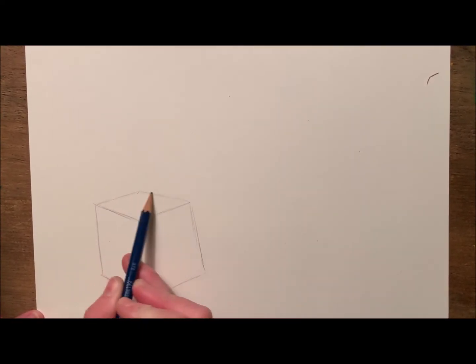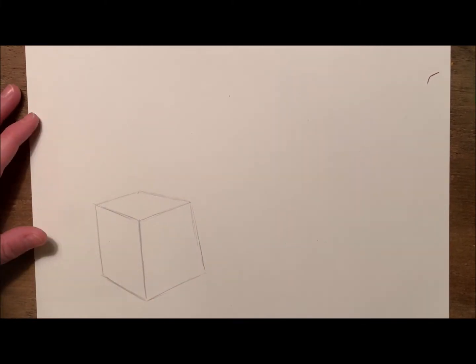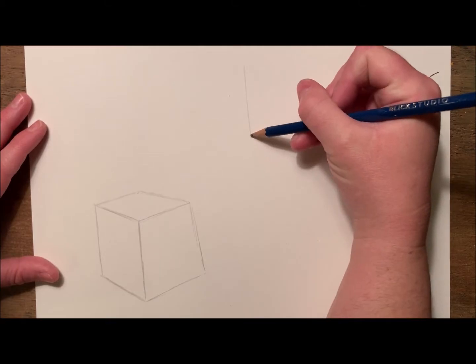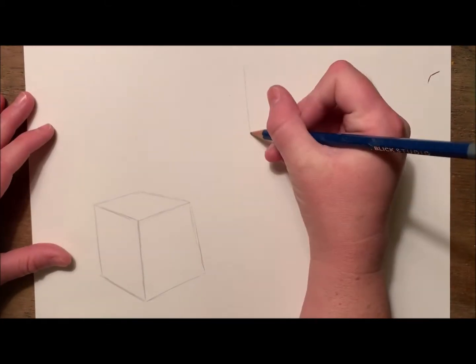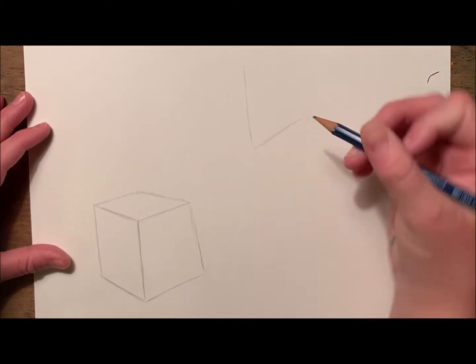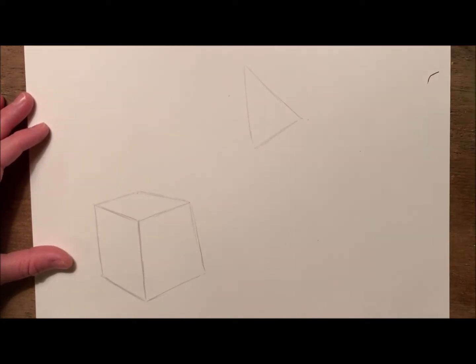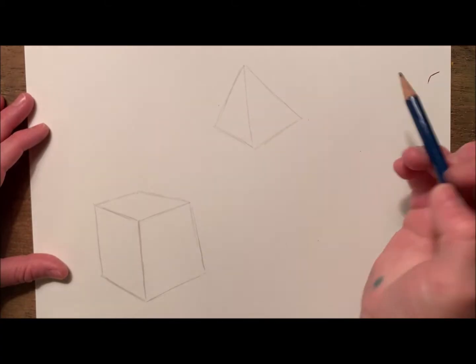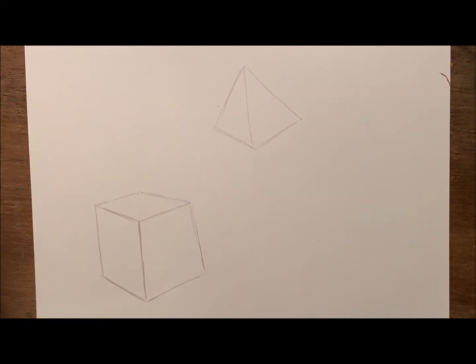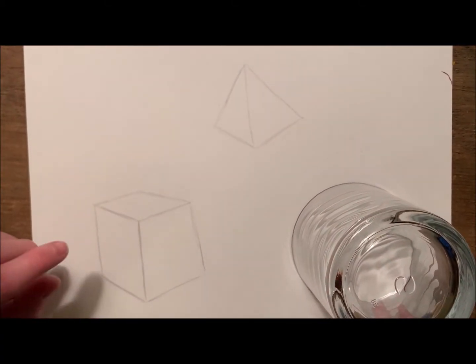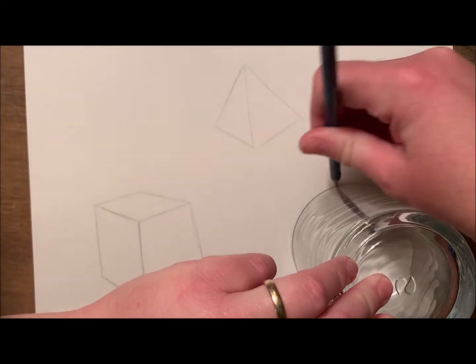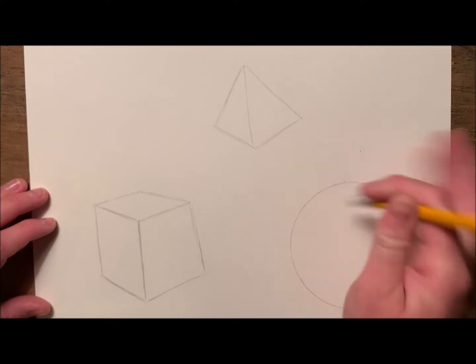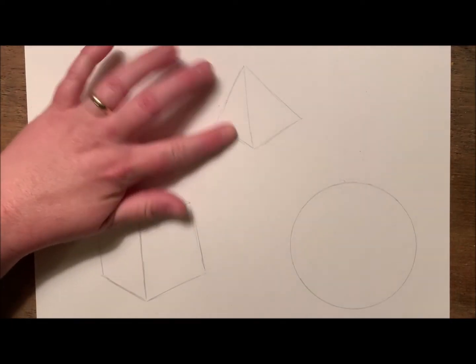Now for my pyramid, I'm starting again with a vertical line and a V-shape on the bottom with two triangles connected together. Both of these shapes are drawn in two-point perspective, and again there's many different ways to draw these. Now for my sphere, I'm simply tracing a glass because a sphere is simply a circle. Now I'm ready to shade.